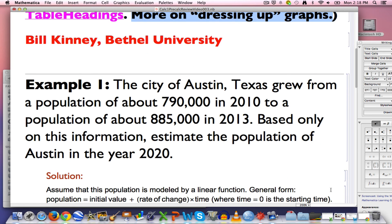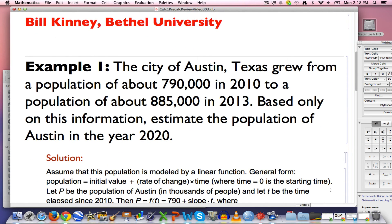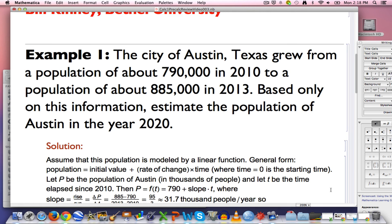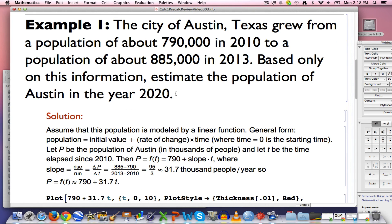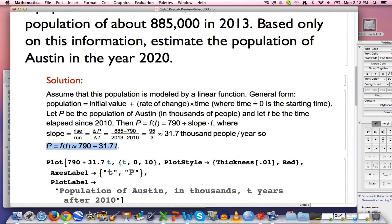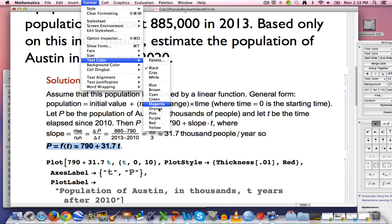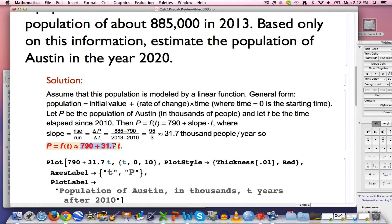We've considered two examples, one a population growth example and one a car depreciation example. Let's focus on the population growth again for this video. It's about the city of Austin, Texas and its growth from 2010 to 2013 and use of the model to estimate the population in the year 2020. This formula down here was our final approximate answer that we can use to help us estimate the population in the year 2020. It is a linear function of t. t only appears to a first power and when we plot the function we see a straight line, that's why it's called a linear function.